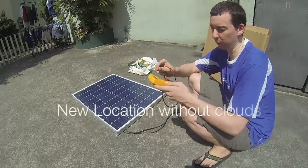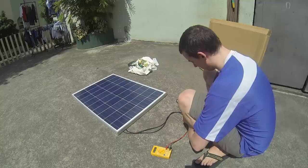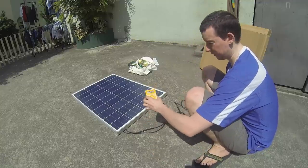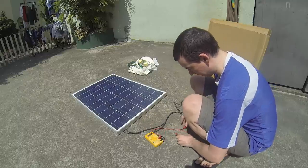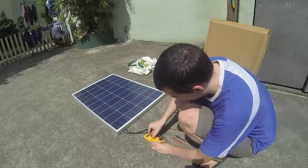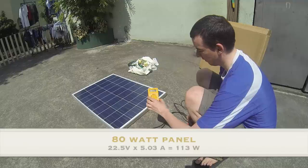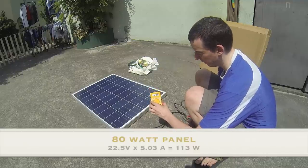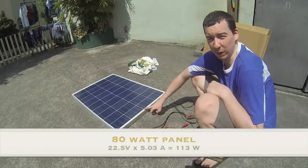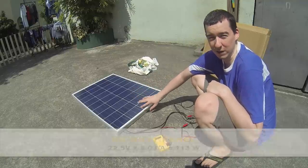Now let's measure the open circuit current on this 80 watt panel. 5 amps. Measure the voltage. 22 volts. So that's more like 100 watt and that's only meant to be an 80 watt panel. Of course it's open circuit but that's a very good indication that this is a good panel.